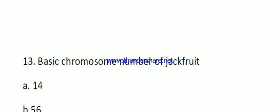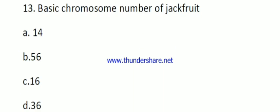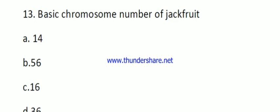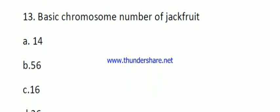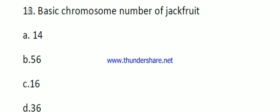From question number 13, the question asks for basic chromosome number. All previous questions were asking for somatic chromosome number, which is represented as 2n. But if the question asks for basic chromosome number, that is represented as X. Somatic chromosome number is 2n, while basic chromosome number is X.